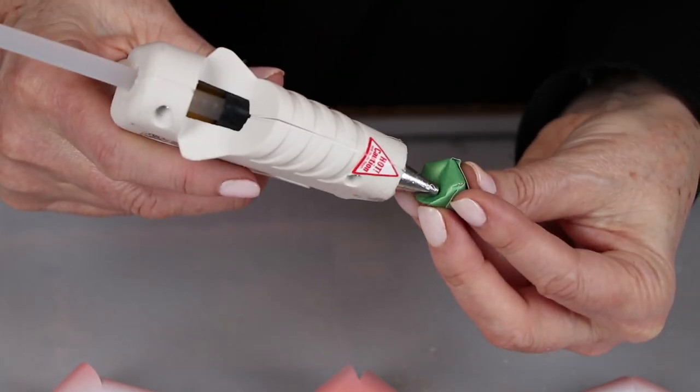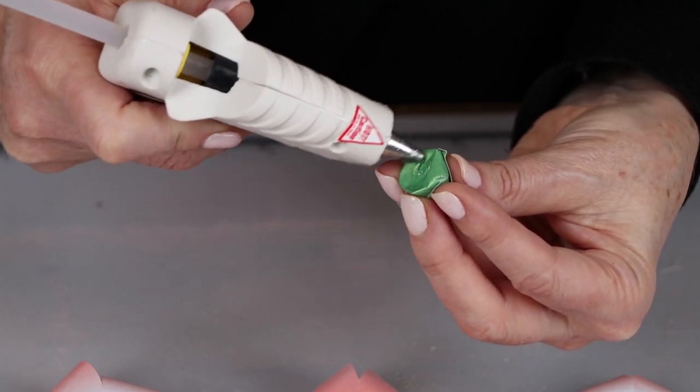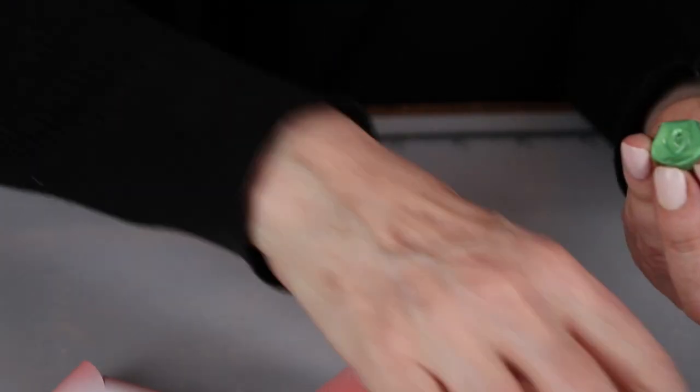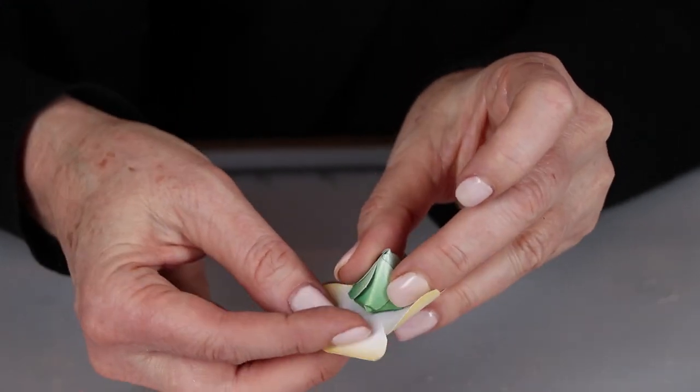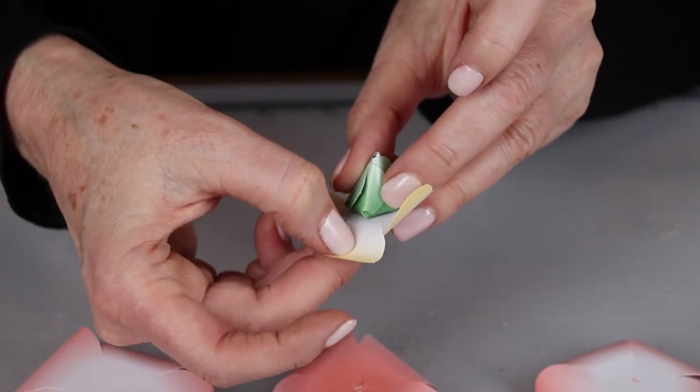I'll put some glue on the back. This is the hardest one to do because it wants to smash right down the middle, but you can do it. Then I'll place that right into the second one with the corner going right through the center of the petal.